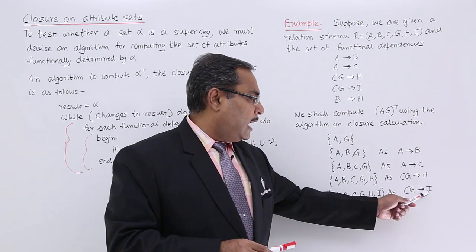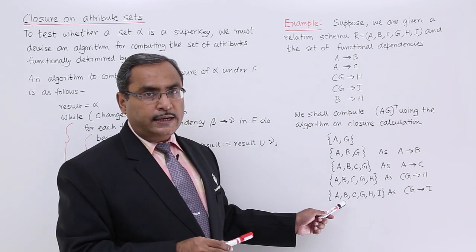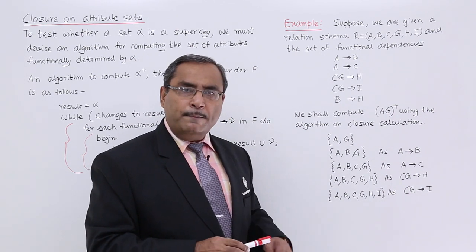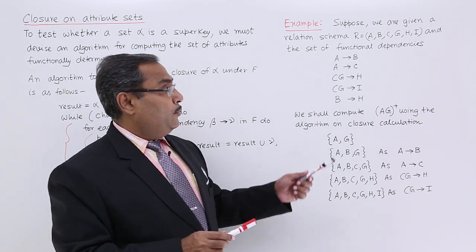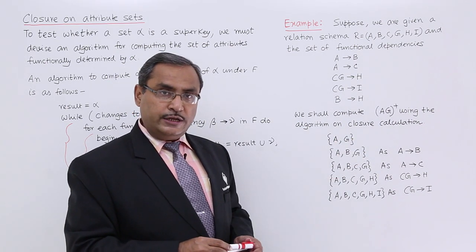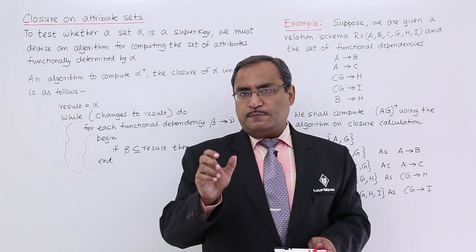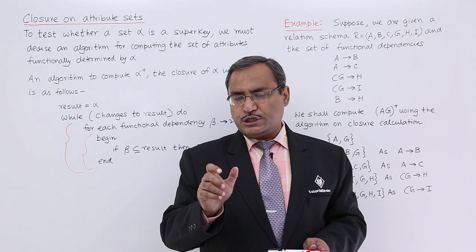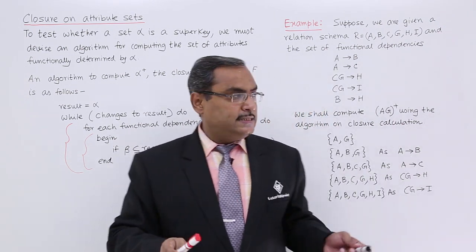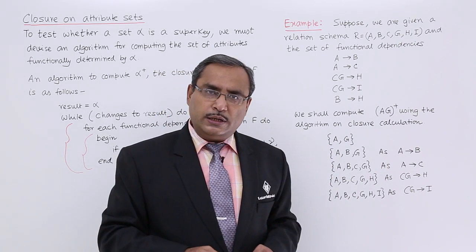CG determines I: since C and G are already in the result, I is brought in as well. Now you see A, B, C, G, H, I — all the attributes have come into the result. Therefore, we can easily say that AG is a super key for this relation. This is how we prove whether an attribute set is a super key depending upon the functional dependencies given.